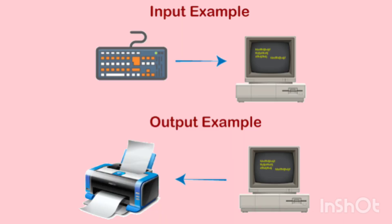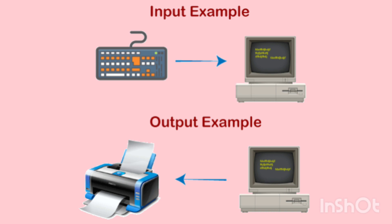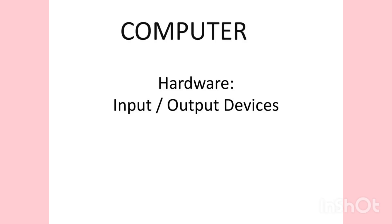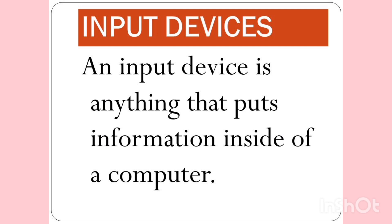Input is the work and instructions we feed into the computer — we put information into the computer, and the computer gives us processed data, which is called output. There are two types of devices: input devices and output devices.